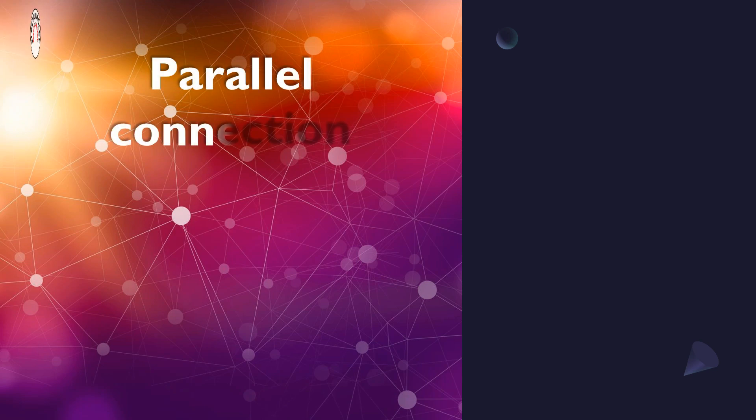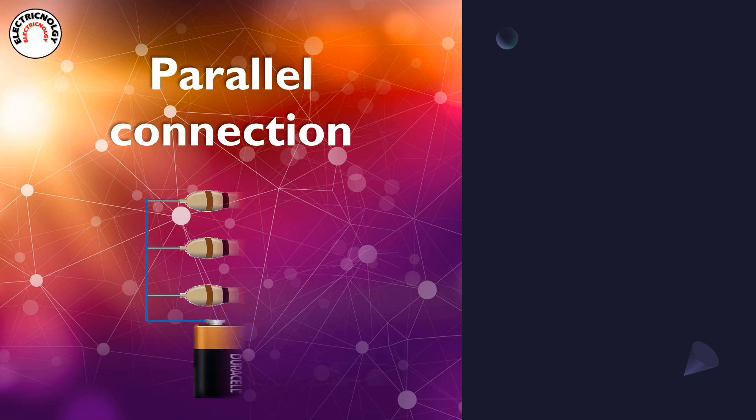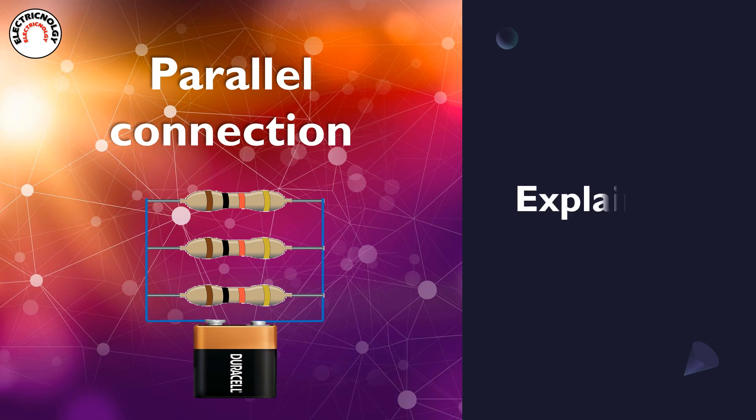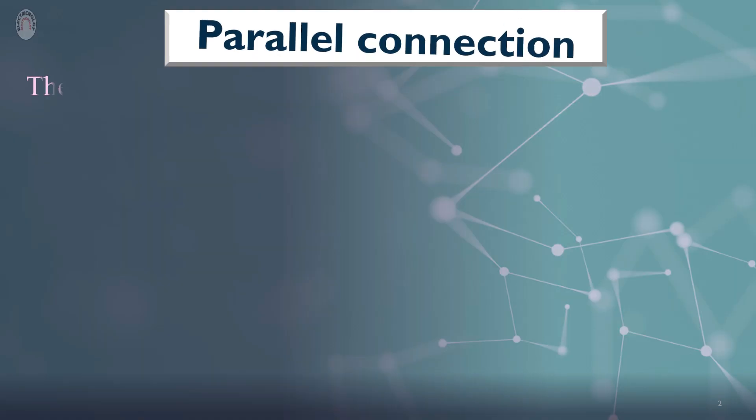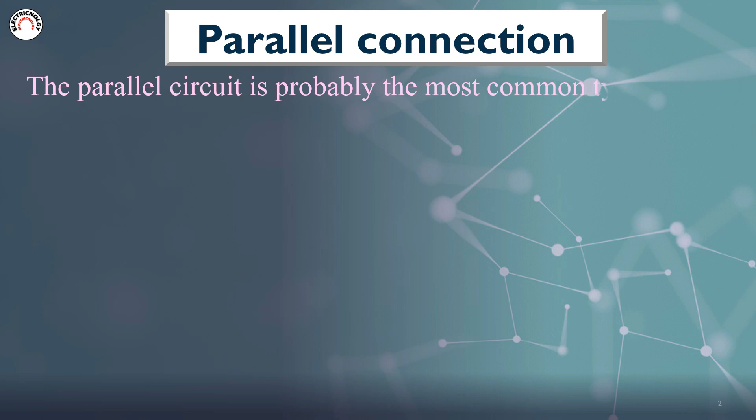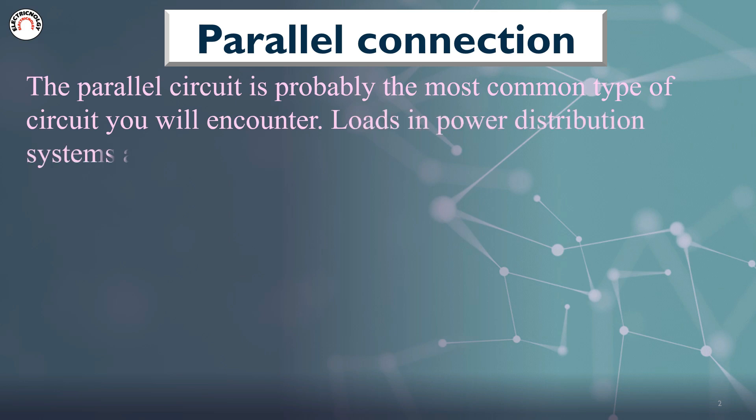Parallel Connection Explained in Examples. The parallel circuit is probably the most common type of circuit you will encounter. Loads in power distribution systems are mostly connected in parallel with each other in one way or another.